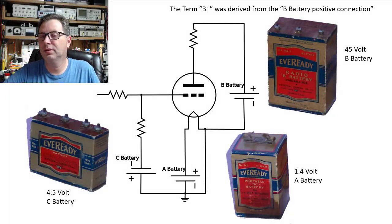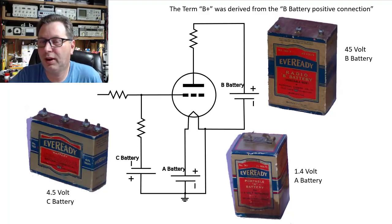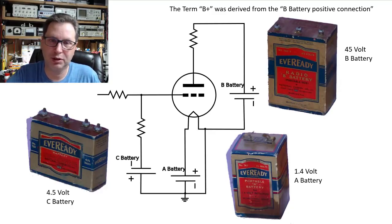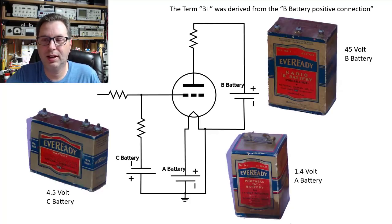Okay, so in those days, 1906, when this triode was first created, electricity was not in most people's houses. There were no such thing as high voltage power supplies. Rectification did not exist at that point in time. So if you were going to make one of these vacuum tubes operate in the early days, it had to be done via batteries, and they did exist at the time.